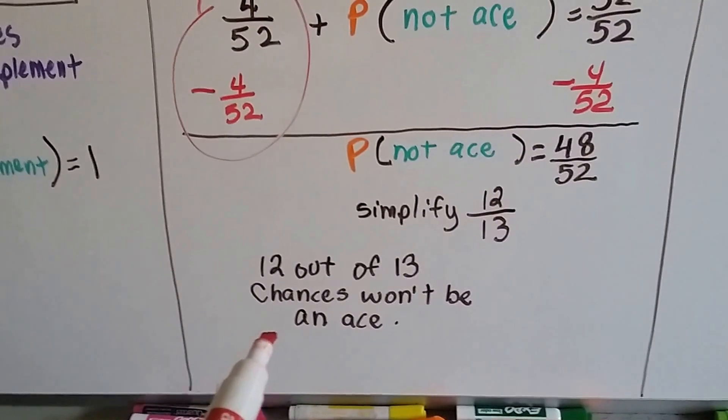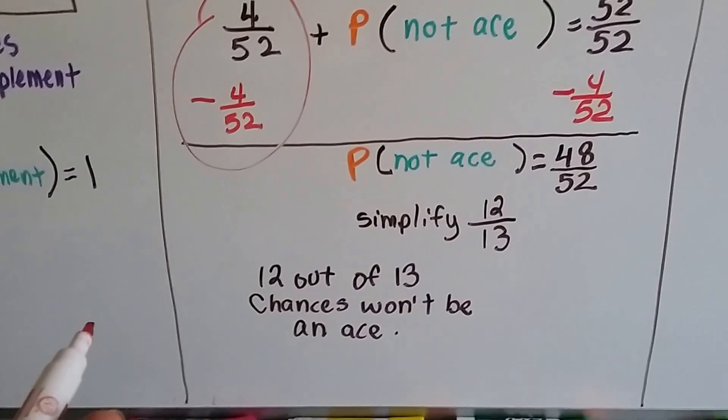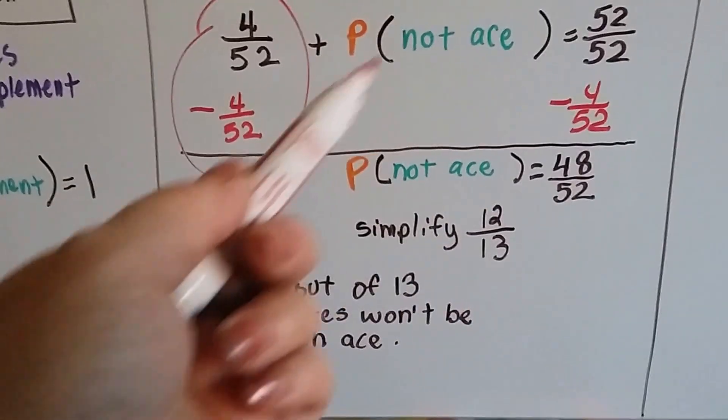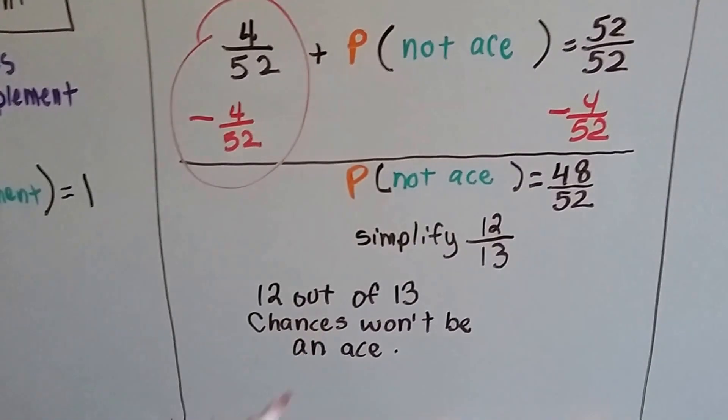Both can be divided by 4, so we simplify to 12 over 13. So there's a 12 out of 13 chance it won't be an ace. We used the inverse operation to isolate the probability of it not being an ace.